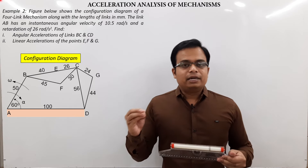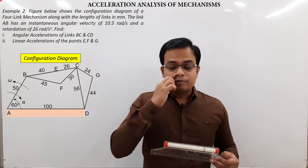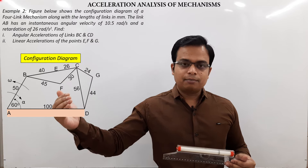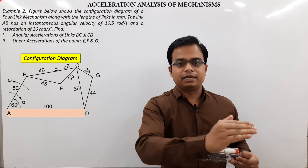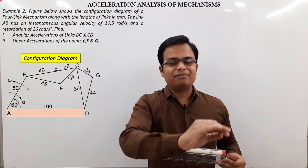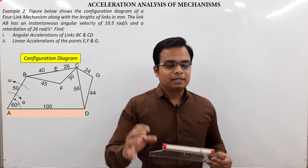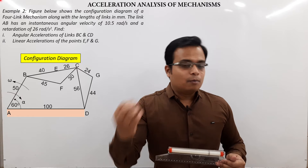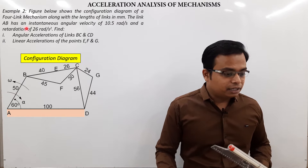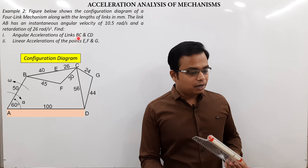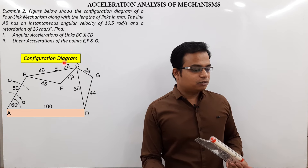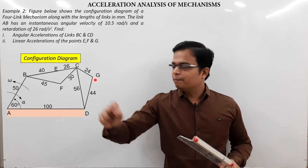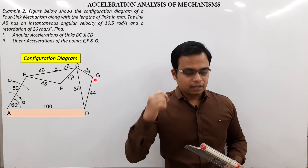The approach has three stages: stage one is the configuration diagram, stage two is the velocity diagram, and stage three is the acceleration diagram. Once you complete these three stages, 95% of the problem is already solved. Then you just need to extract data and plug it into formulas to get the angular accelerations of some links and linear accelerations of points E, F, and G.